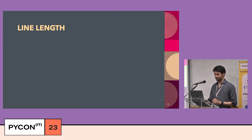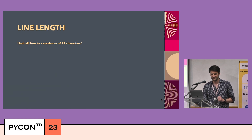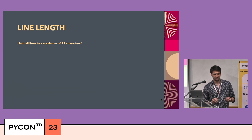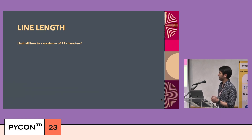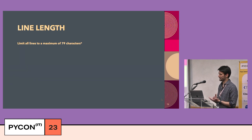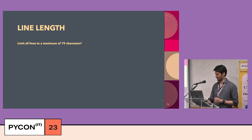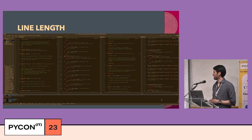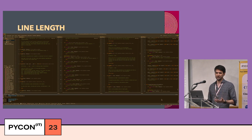Now let's move on to line lengths. According to PEP8, limit all lines to a maximum of 79 characters. But PEP8 was introduced almost 22 years ago, and a lot has changed. Today, the average monitor with a 16:9 aspect ratio can have four files open at once. So I suggest having it bigger — maybe 100 or 120 characters. It doesn't matter that much, but it matters to have it set, as it makes linter integration easier.